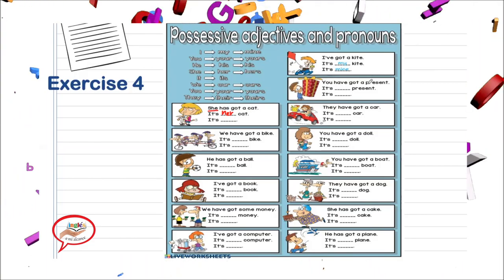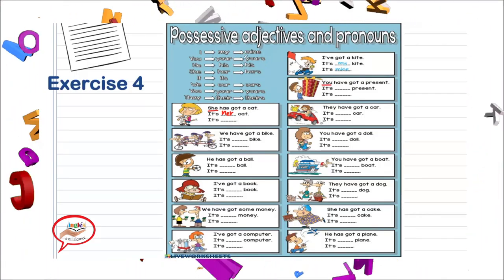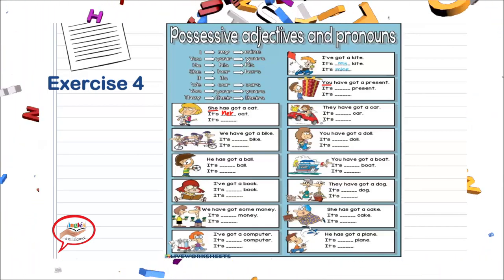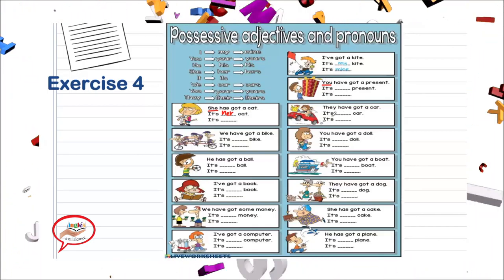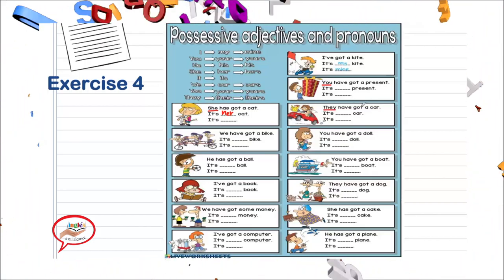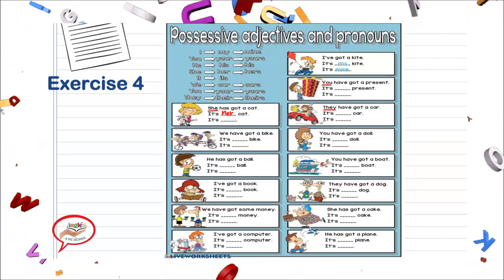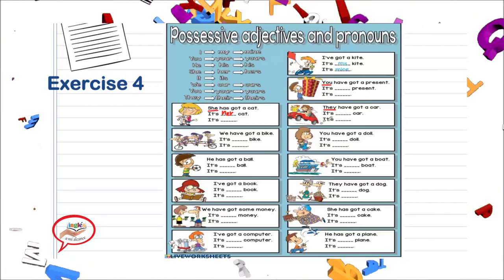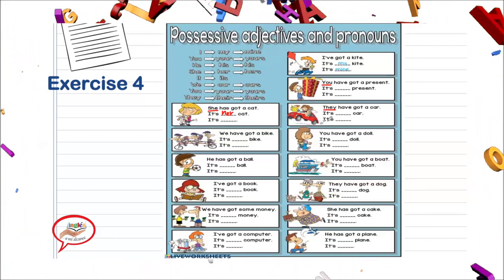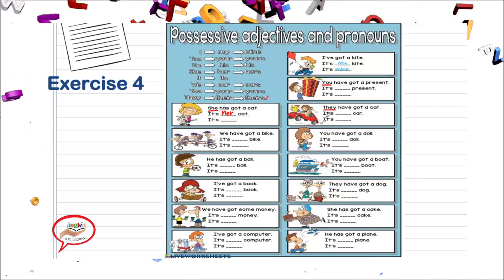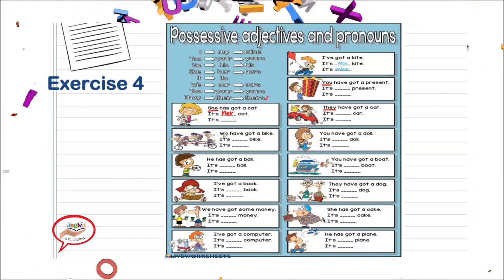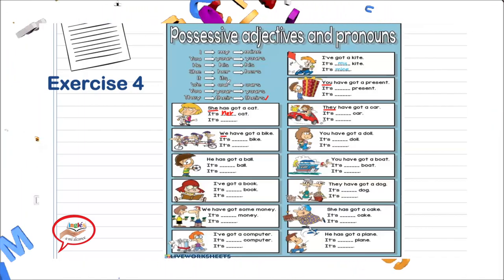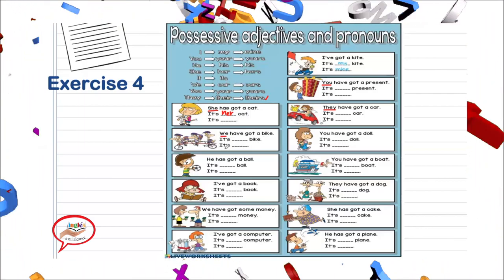You have got a present — it's your present. ¿Y el possessive pronoun? It's yours. Very good. They have got a car — it's their car. ¿Un possessive pronoun para their? It's theirs. Very good. We have got a bike — it's our bike. It's ours.